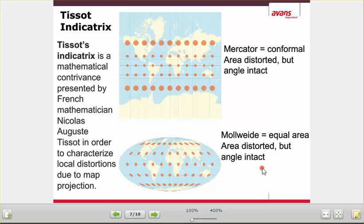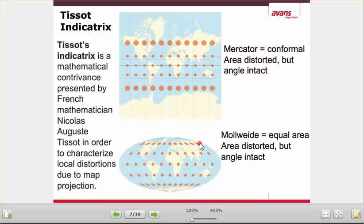Another map projection is called the equal area map. Mollweide was the first to come up with this type of map. In this projection, area is not distorted, but the angles are distorted. As you can see, the area of the dot is about right, but it should be a circle. The further away you go from the center point of an equal area map, the more distorted the angles become — the perfect circle becomes an oval, and further toward the edges it becomes an oblique oval.